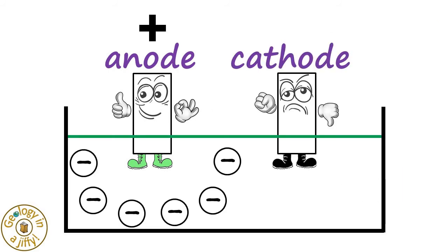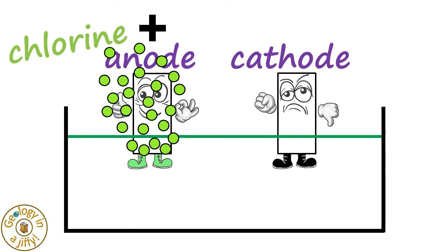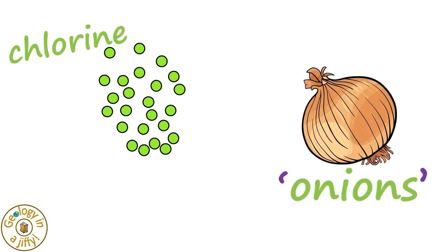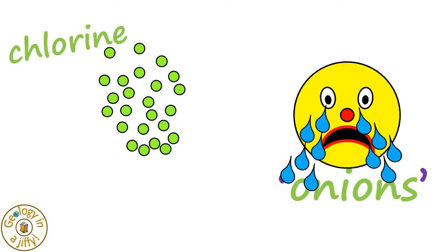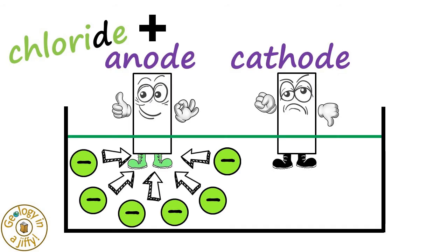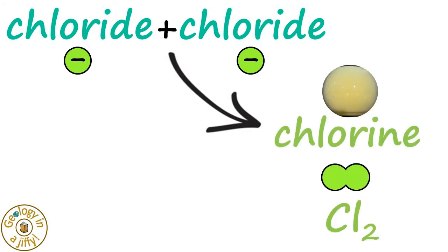So the negatively charged anions in our solution are attracted to the positively charged anode, and with this being copper chloride solution, the chloride ions are the anions which then bond to form chlorine gas. Chlorine made from chloride anions, which sounds like onions, and chlorine can make you cry as onions can. The chlorine is made from the chloride anions, these each having a single negative charge, and two of these anions will bond together to make a covalent molecule of chlorine. That's amazing!